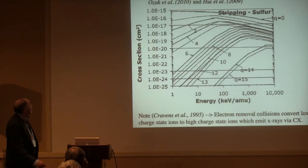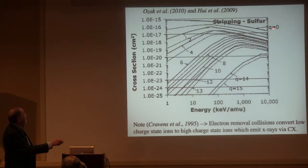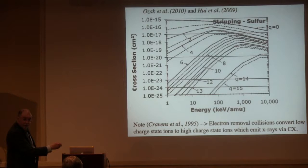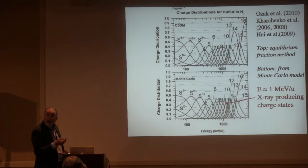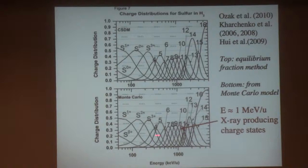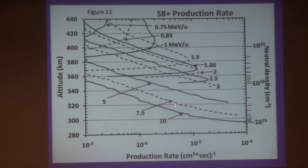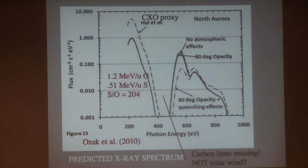Some of our stripping cross-sections — we have them for sulfur and oxygen — show that at high energies of about an MeV per nucleon, the stripping cross-sections exceed the charge exchange cross-sections. If you do an equilibrium fraction or Monte Carlo model, you will only get the high charge state X-ray-emitting states plowing through the atmosphere at at least about 1 MeV per nucleon. Otherwise, the charge state is too low and it won't work. And obviously, as they get more energetic they penetrate deeper — too energetic and you get below the methane layer with opacity effects, which doesn't help. So there's an optimum energy range.